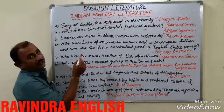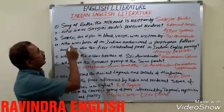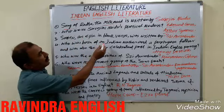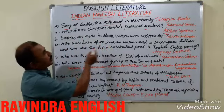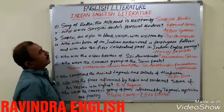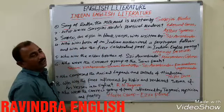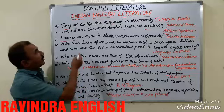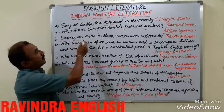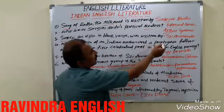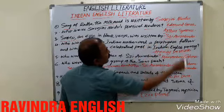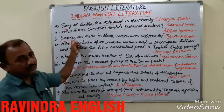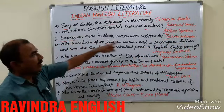'Savitri,' an epic in blank verse, was written by Sri Aurobindo. So 'Savitri' — Sri Aurobindo.